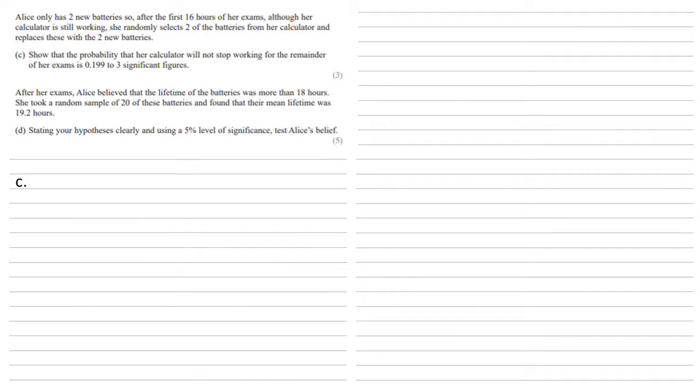Alice only has two new batteries. After the first 16 hours of her exam, although her calculator is still working, she randomly selects two of the batteries from her calculator and replaces these with the two new batteries. Showing that the probability that her calculator will not stop working for the remainder of her exams is 0.199 to three significant figures.